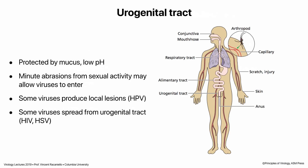Your genital tract is another mucosal surface susceptible to infection. Often sexual activity causes micro-abrasions that allow viruses to enter. Some viruses make local lesions like human papillomaviruses that cause warts. HIV and herpes simplex viruses can spread from that initial site of infection.